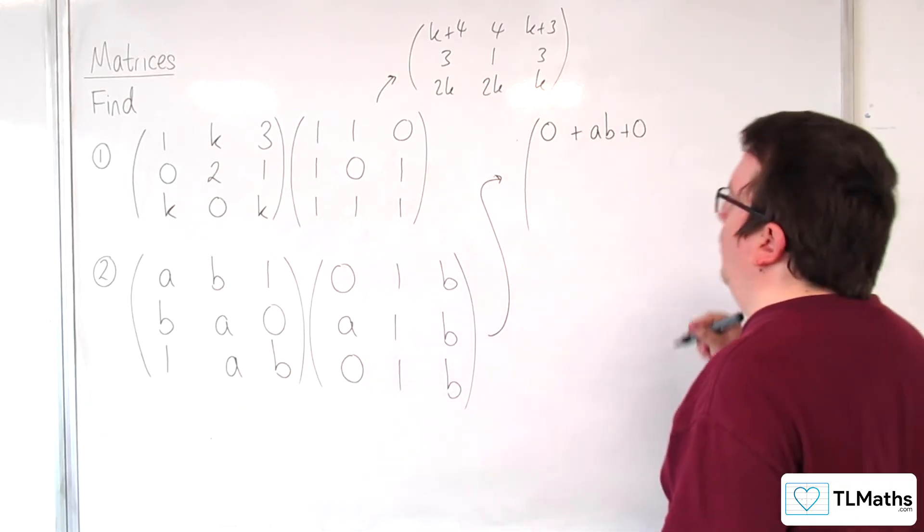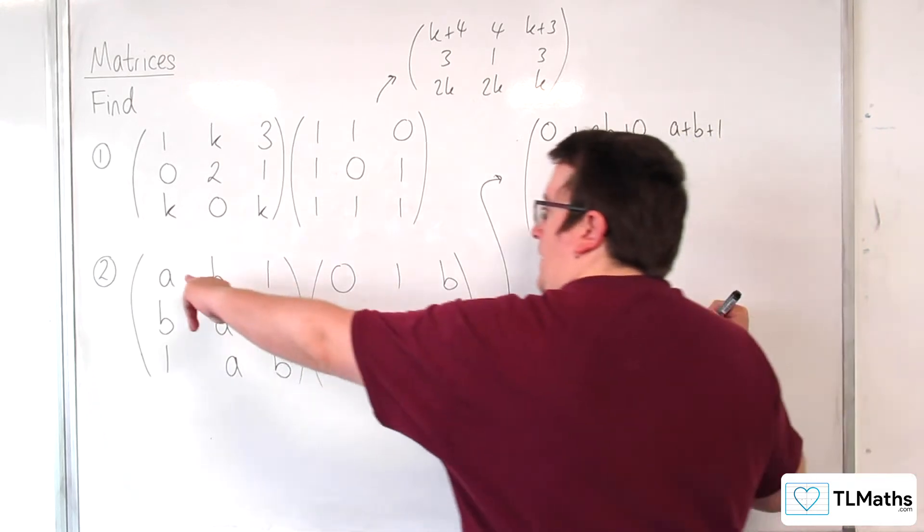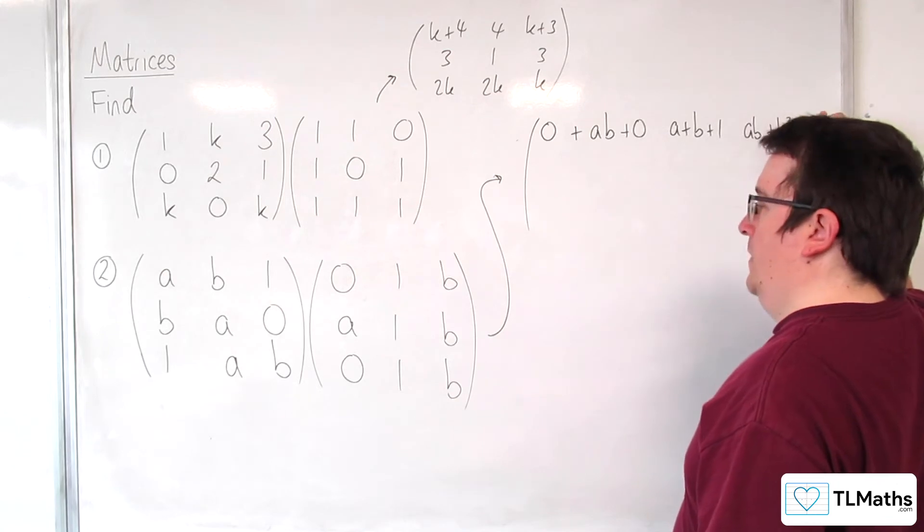Then we've got ab1 times 1, 1, 1, so we get a, plus b, plus 1. Then ab1 times bbb, so we're going to get ab, plus b squared, plus b.